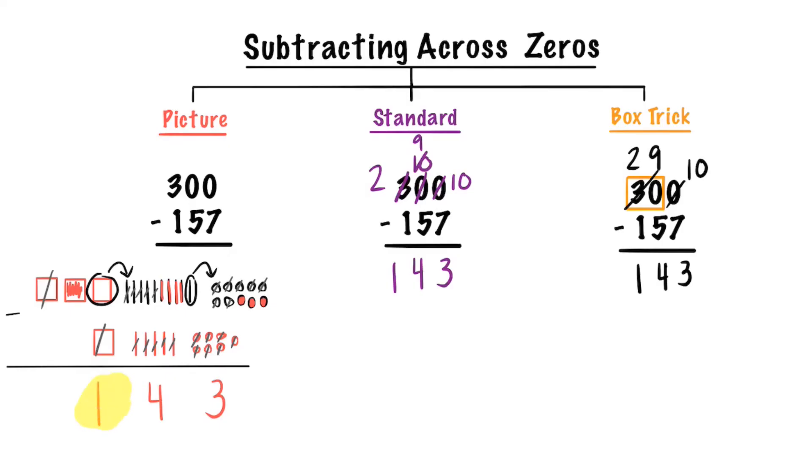All the differences for these three strategies are 143.